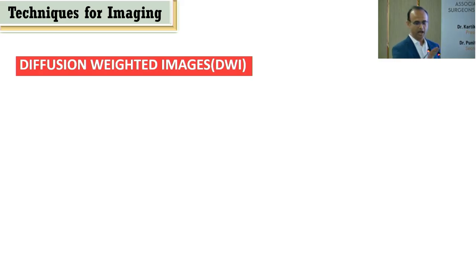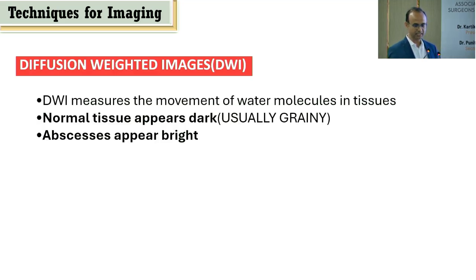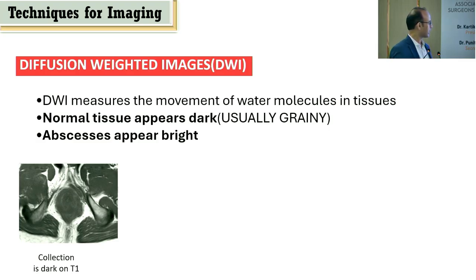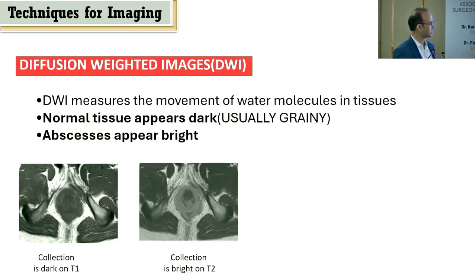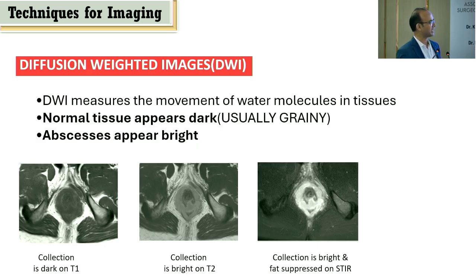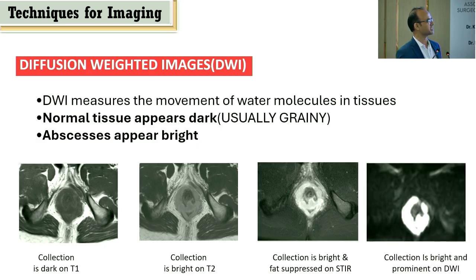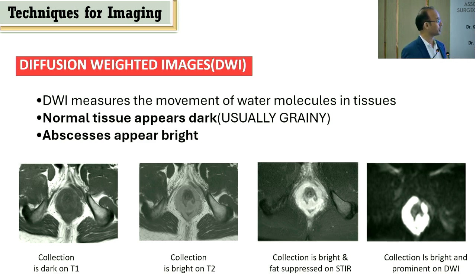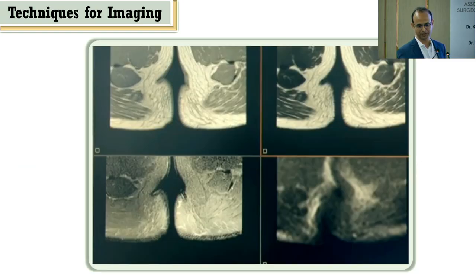Diffusion-weighted imaging (DWI) goes one step further — normal tissue appears dark or greenish, while inflammation stands out. On T1, a collection is dark; on T2, it is bright; on fat-suppressed sequences, the collection becomes brighter while the rest is suppressed; and on DWI, tissue appears greenish and darker while only pathology becomes prominent. Radiologists view all four sequences together on one console to appreciate both anatomy and pathology simultaneously.